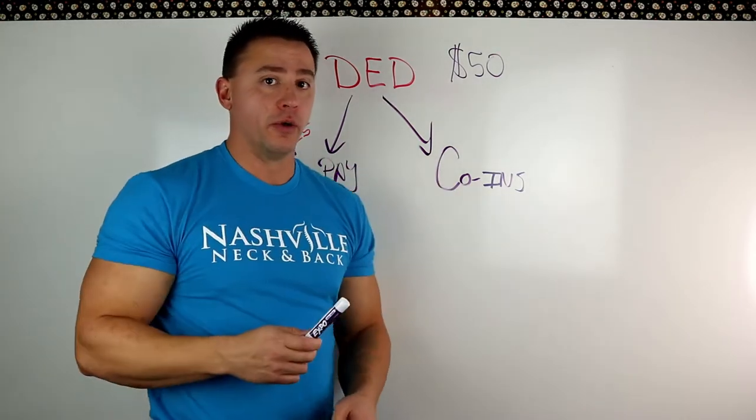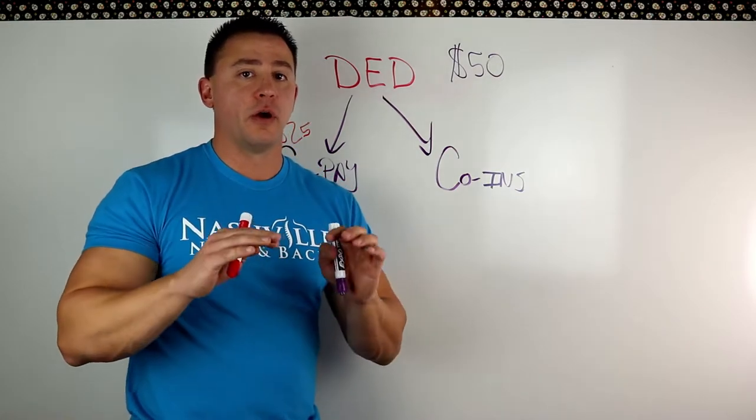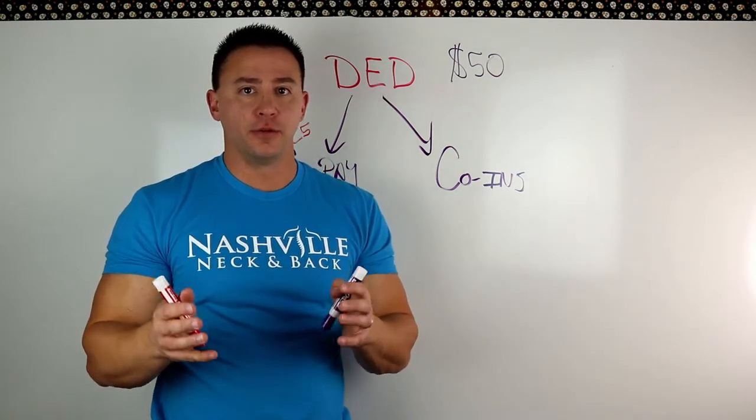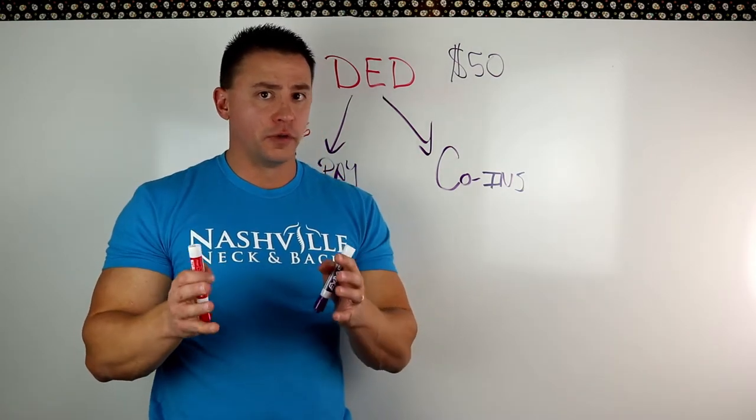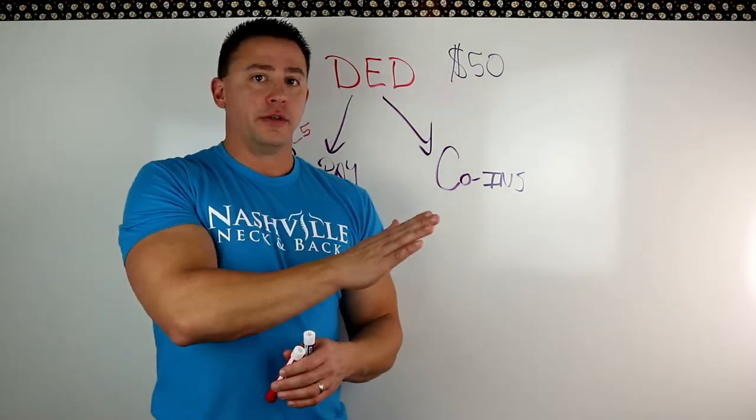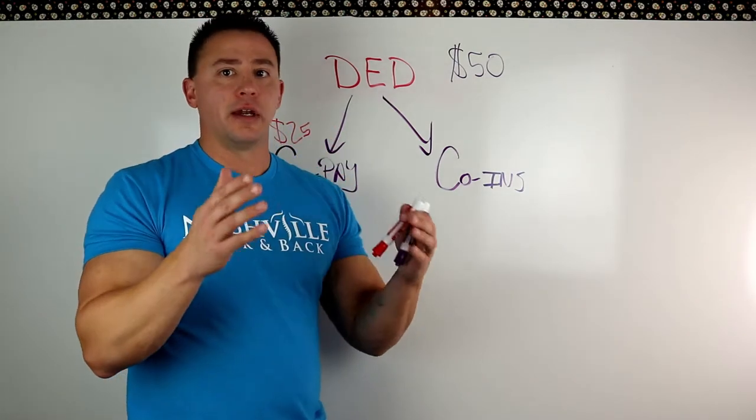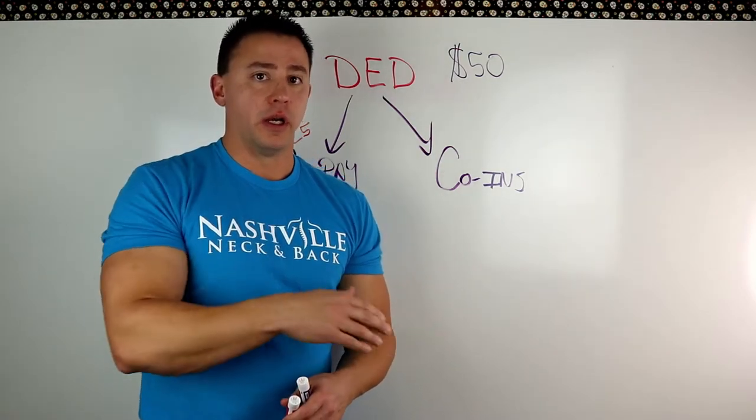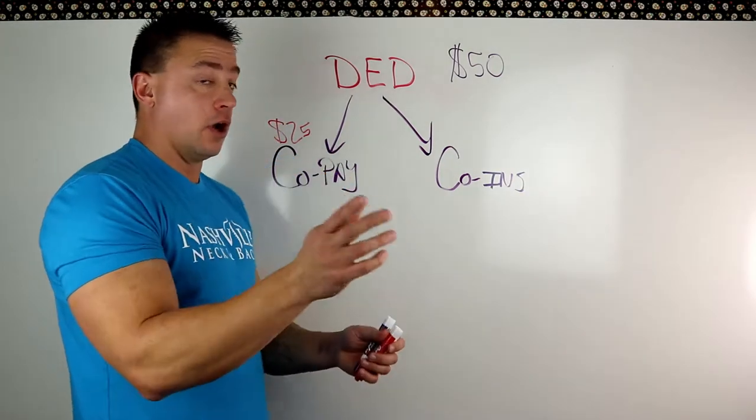If you don't have a co-pay, if instead you have a co-insurance, a co-insurance is always a percentage. And you'll see it written or talked about like 90/10, 80/20, 70/30. So if you see that, they're talking about co-insurance. And what that means is your insurance company, if we take 90/10, for example, your insurance company will pay for 90% of it and you will be responsible for 10%.